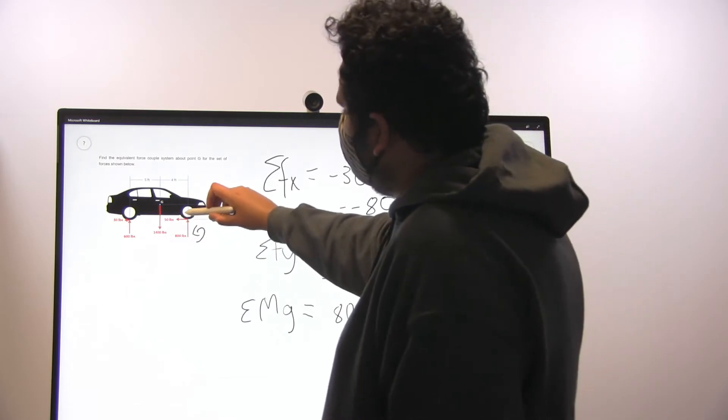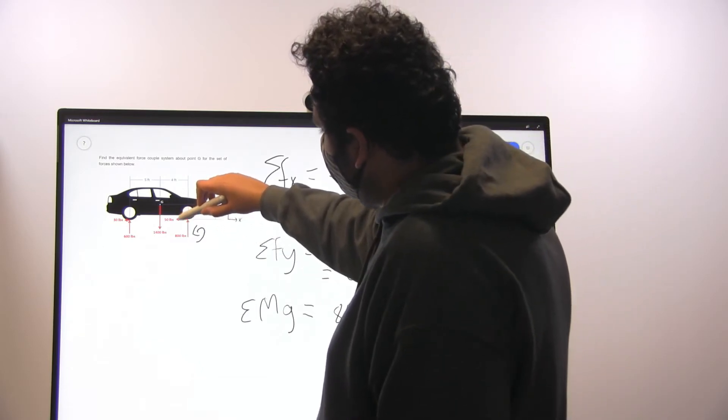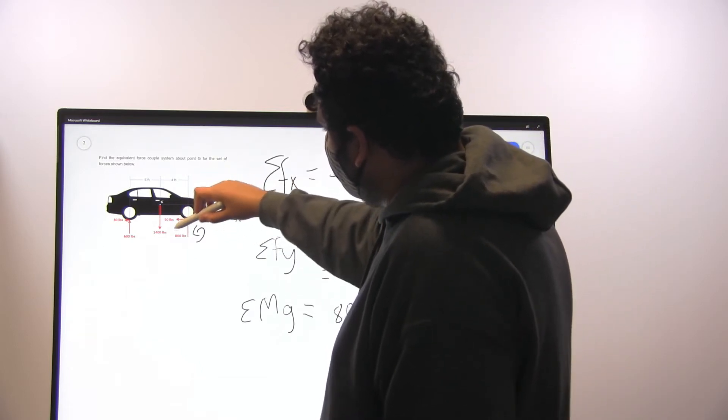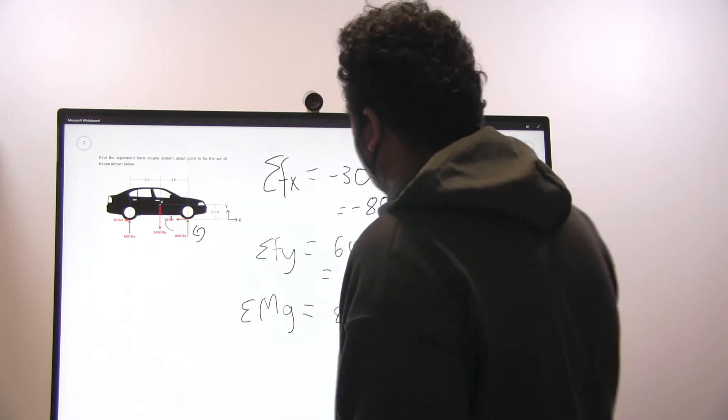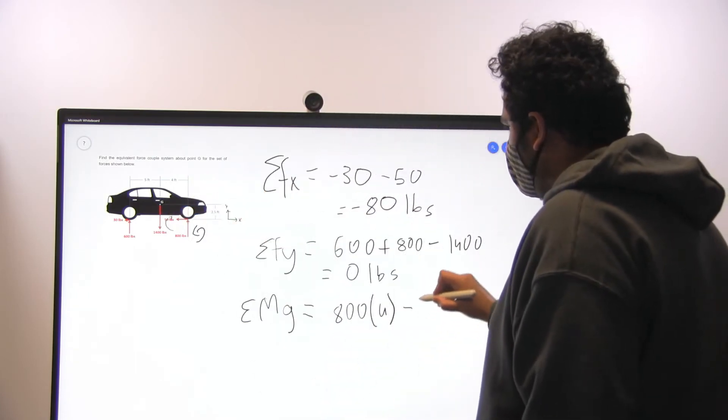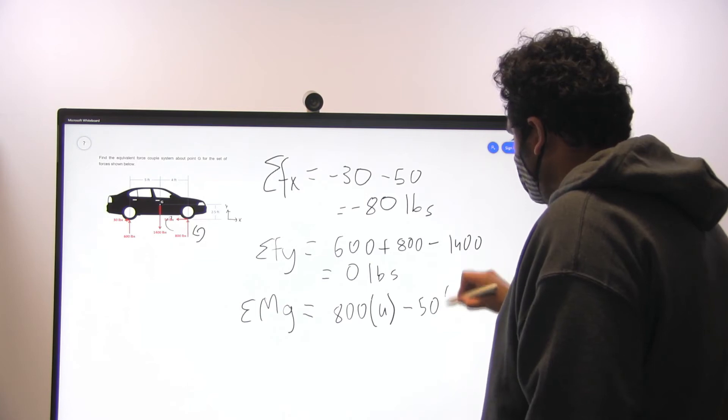And then this 50 kN force is going to be in a clockwise direction, which is why it's going to be negative. Negative 50 times the length, 2.5.